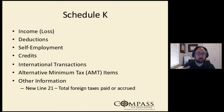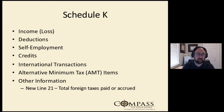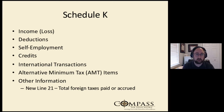So what does Schedule K tell us? It tells us about income and loss, certain deductions, self-employment income, breaks out certain credits, talks about international transactions, AMT items and how those can impact the taxpayer, and some other information — things like distributions that partners take, guaranteed payments, etc. New for this tax year is line 21, which is the total foreign taxes paid or accrued. Before, this was buried in line 16 and broken out by country; here on line 21 it's just one lump sum.